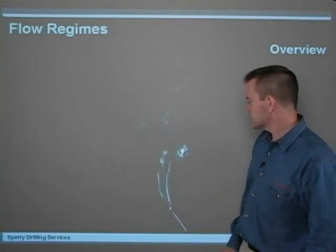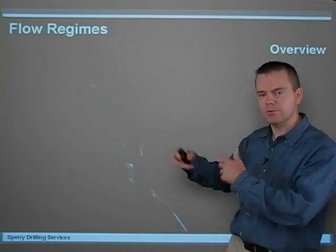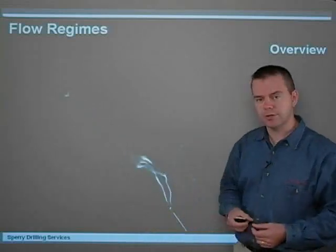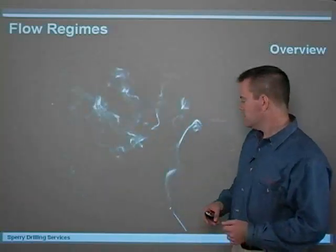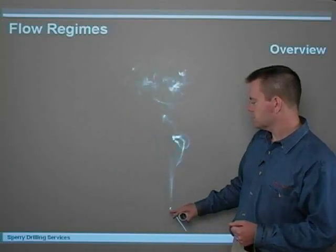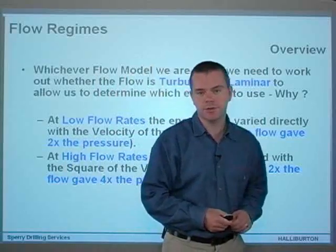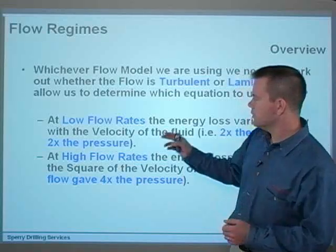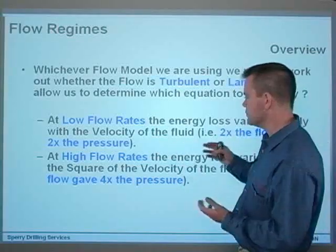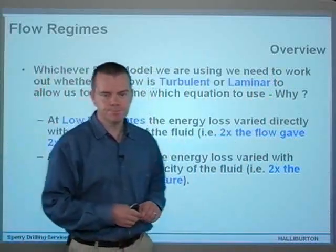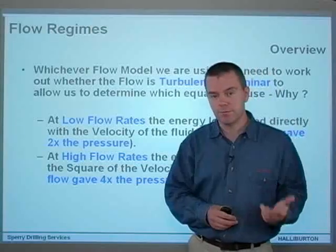How can we predict this? That's what I'm going to explain — how we predict the point where the flow changes from nice parallel lines into more turbulent flow, and we're going to relate this to actual drilling fluids rather than smoke. Whichever flow model we're using, we need to work out whether the flow is turbulent or laminar to determine which equation to use. At low flow rates, the energy loss varied directly with the velocity of the fluid — two times the flow gave two times the pressure. At high flow rates, the energy loss varied with the square of the velocity — two times the flow gave four times the pressure.